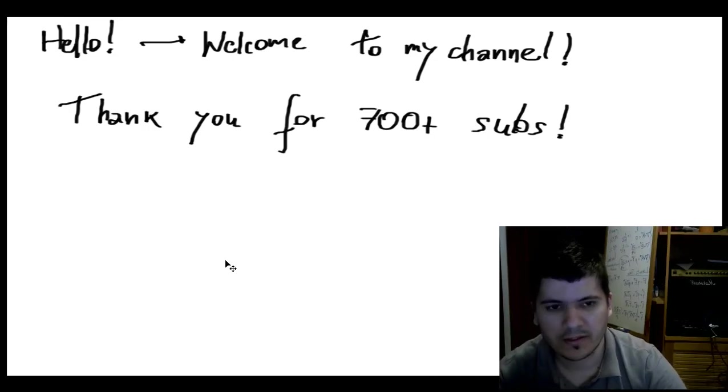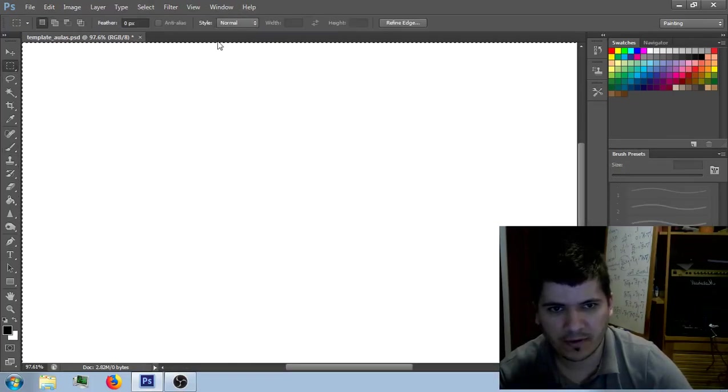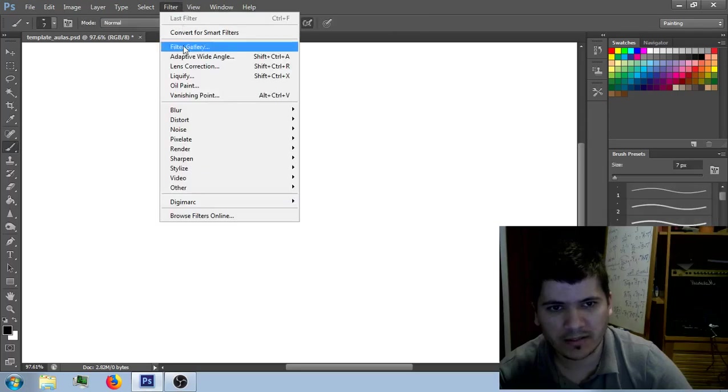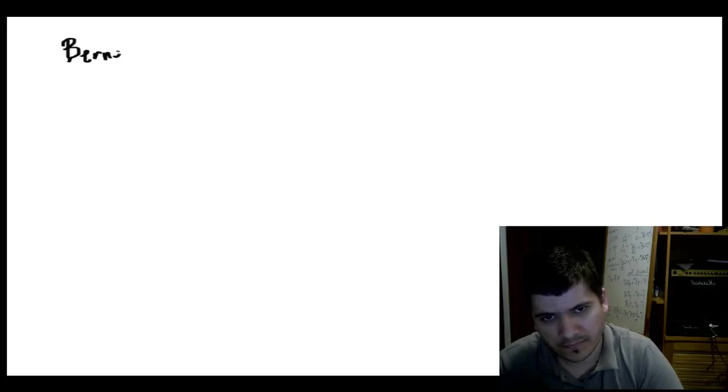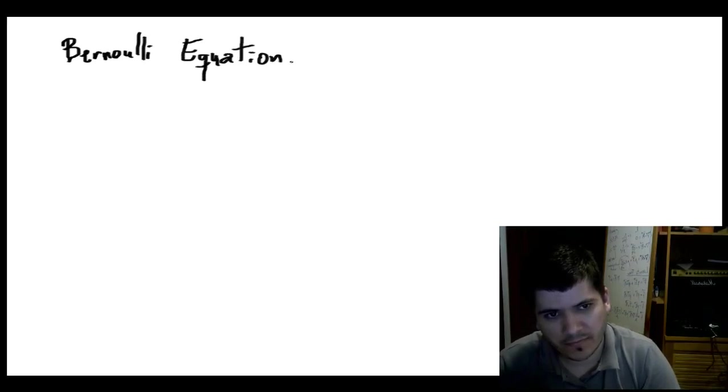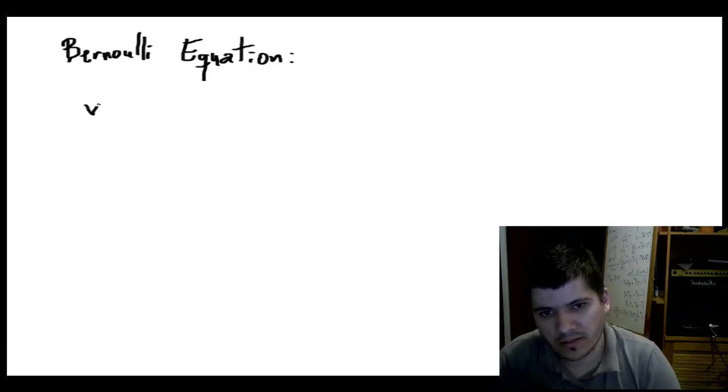So if you remember from your classes on fluid mechanics, the Bernoulli equation—in some cases it's called Bernoulli summation—is given by, if we neglect the forces due to gravity, it looks something like this. Here we have velocity and the gravity acceleration.